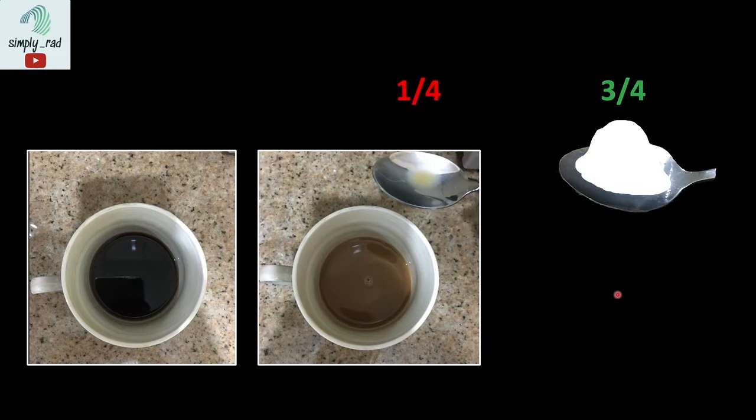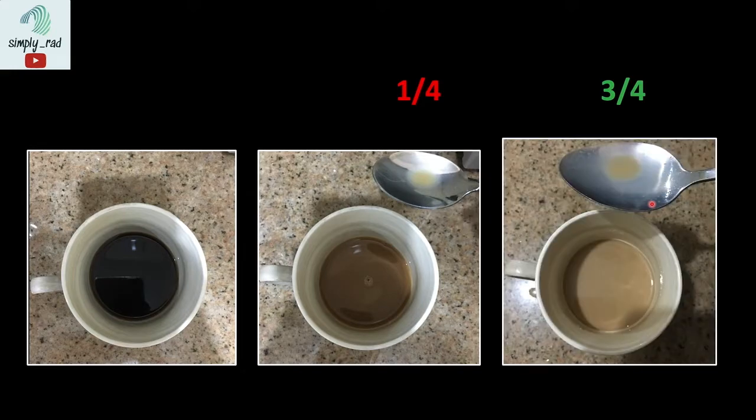Next, we add a heaping tablespoon of creamer to the coffee. It is heaping to represent three-fourths of blood flowing into the liver. Now you see, the coffee becomes even brighter compared to the previous phase.